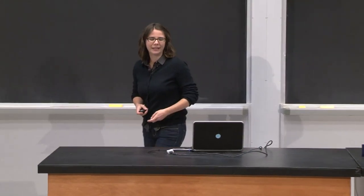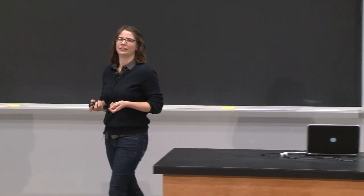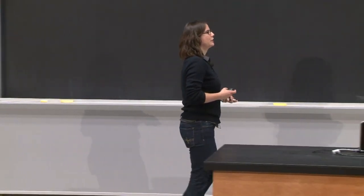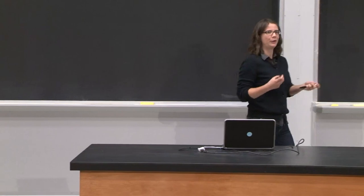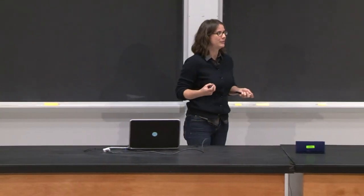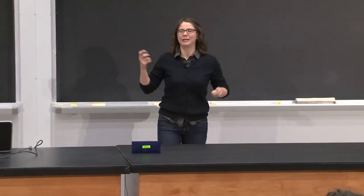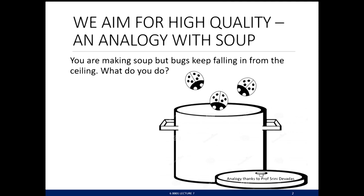So before we begin, let's start with an analogy to sort of come back to real life for a second. So I've made soup before. Perhaps you've made soup before. Let's say you're making soup in this big pot here. And it turns out that bugs keep falling into your soup from the ceiling. What do you do if you encounter this issue?